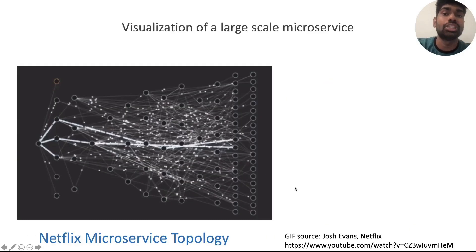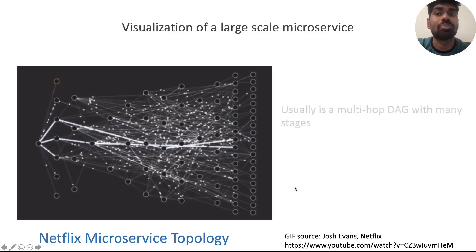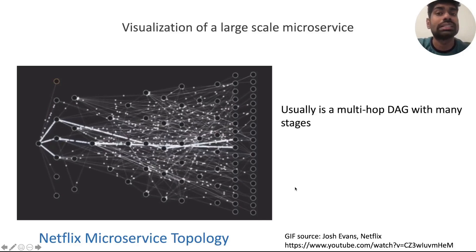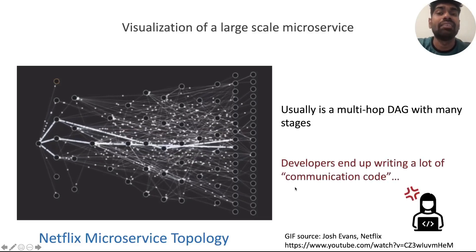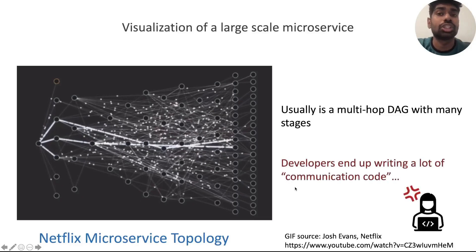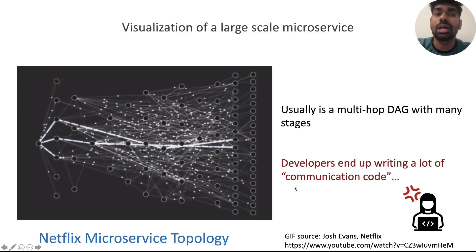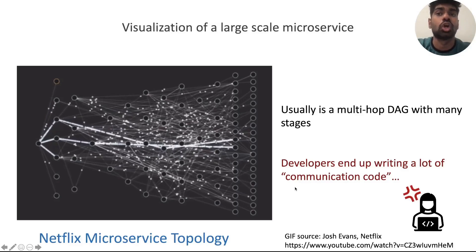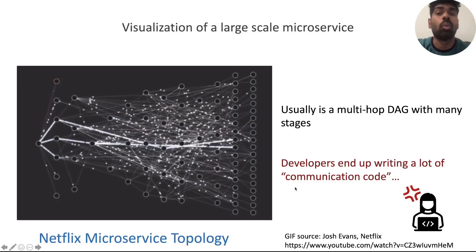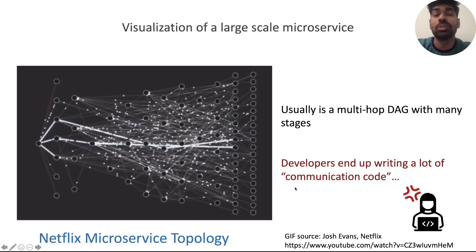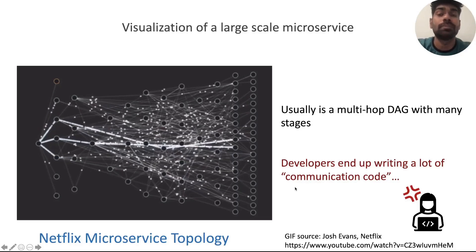Here's a visualization of Netflix, which is one such large-scale production microservice. What you notice is that it's a multi-hop DAG with many, many stages. Inevitably, with many such services talking to each other, developers end up spending a lot of time writing communication logic like how to do name resolution or load balancing, while what they really want to be doing is just focusing on the application's business logic.